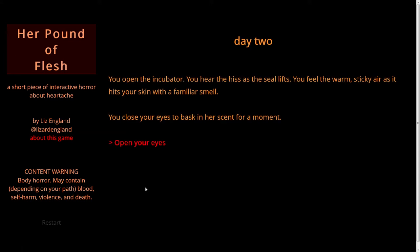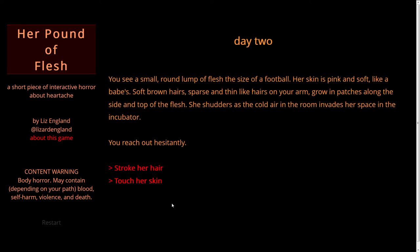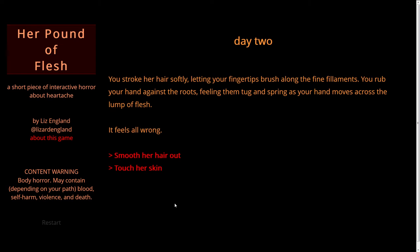Open the incubator. You open it and hear the hiss as the seal lifts. You feel the warm, sticky air hit your skin with a familiar smell. You close your eyes to bask in her scent for a moment. You see a small, round lump of flesh the size of a football. Her skin is pink and soft, like a babe's. Soft, brown hairs sparse and thin grow in patches along the side and top of the flesh. She shudders as the cold air in the room invades her space. You reach out hesitantly. Stroke her hair or touch her skin. Let's stroke her hair — you stroke her hair softly, letting your fingertips brush along the fine filaments. It feels all wrong.